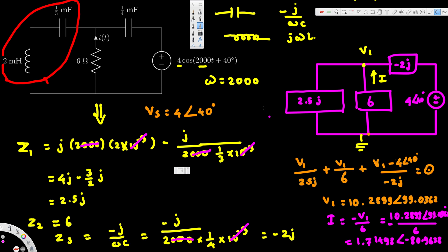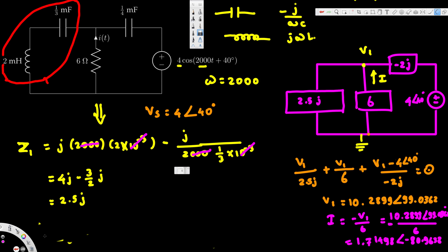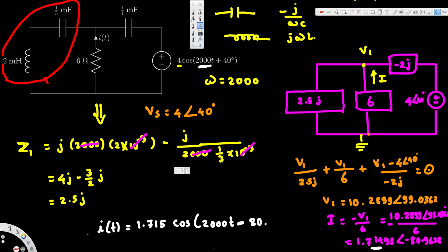Now we convert back to time domain. The amplitude is approximately 1.715, and the angle is −80.9638°. So the final answer is: i(t) = 1.715 cos(2000t − 80.9638°) amperes. This is the current through the six-ohm resistor in time domain.